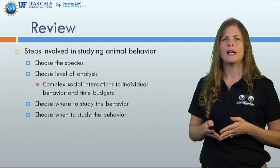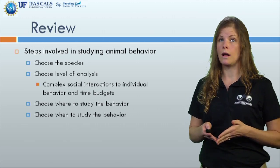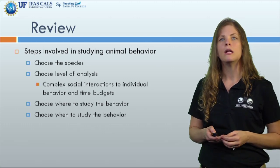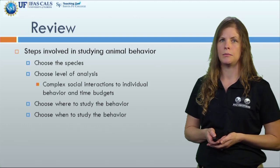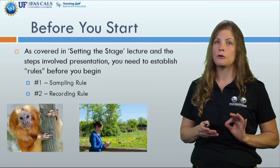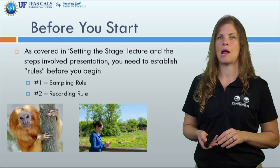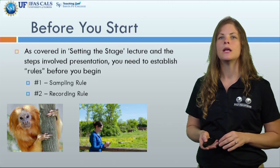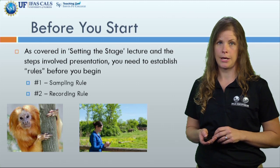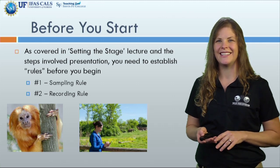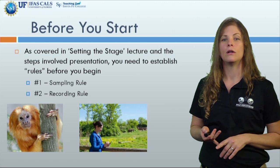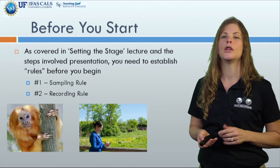Once you've decided and identified the who and what of animal behavior, then you can decide the where and the when to study the animal behavior. Now at this point you're very close to collecting animal behavior in a scientific setting, but you need to determine two more factors in the how you will collect the data. There are just two simple rules: the sampling rule and the recording rule.